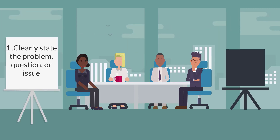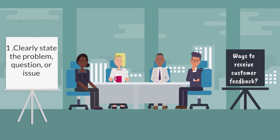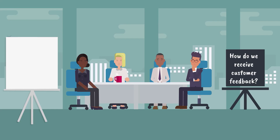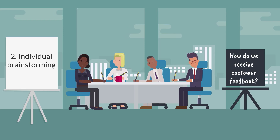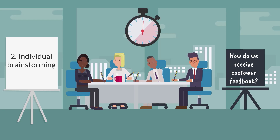To start, clearly state the problem or issue. In our scenario, the team will be discussing ways to receive customer feedback. In the next step, individual brainstorming, each team member silently thinks of solutions or ideas that come to mind when considering the problem and writes down as many as possible in a set period of time.